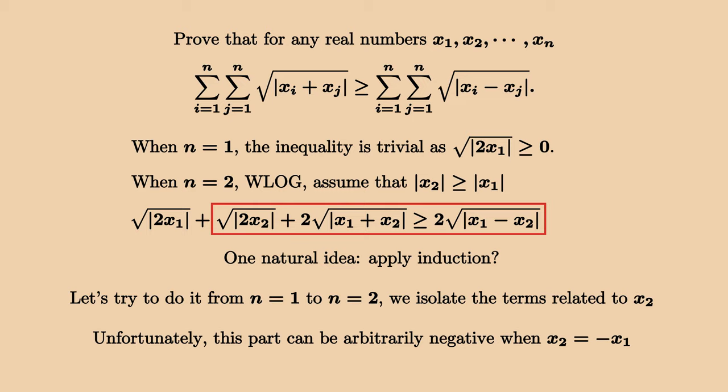Even though this naive way does not work out, it gives us an interesting observation that the inequality is tied when x1 plus x2 equals 0. So let's try to see what happens in a more general situation if we impose this condition.